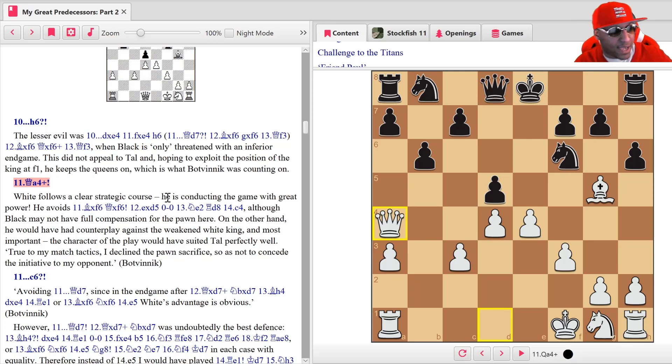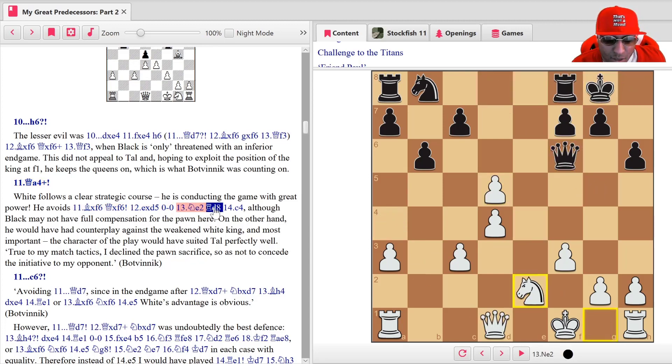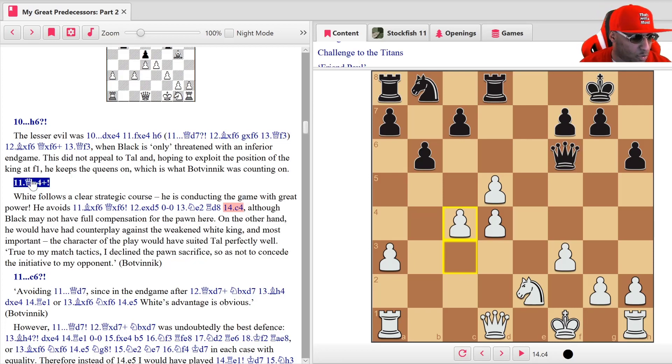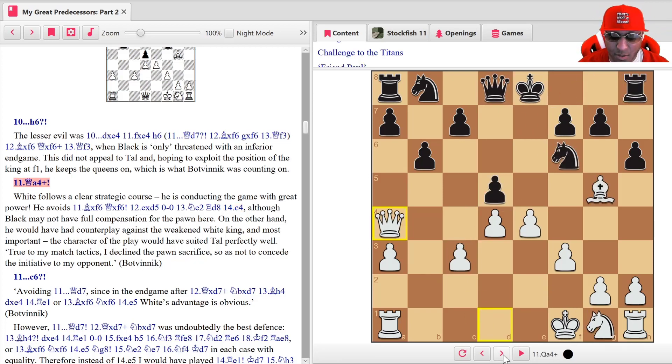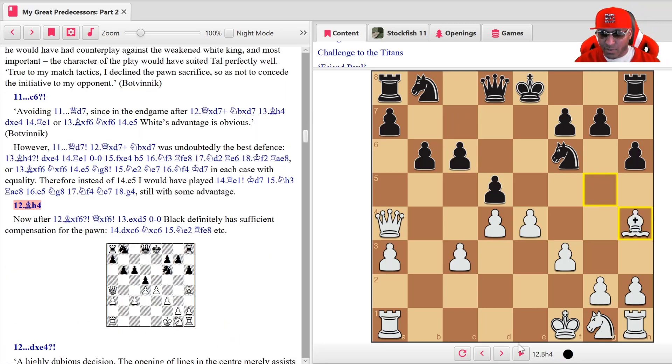After h6, queen a4 check, which is a big boy move. White follows a clear strategic course, conducting the game with great power. He avoids bishop takes f6, queen takes, e takes, castles. I like White here. Rook d8, c4, although Black may not have full compensation for the pawn. After queen a4, we have c6 from Black, from Tal, c6.